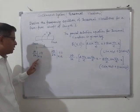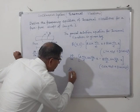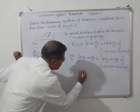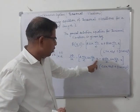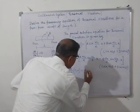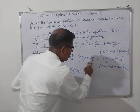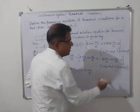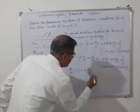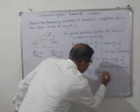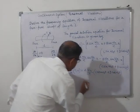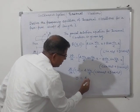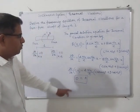Now we apply the boundary condition ∂θ/∂x = 0 at x equal to 0. Putting x = 0: cos(0) = 1, so the first term gives A·ωₙ/c, and sin(0) = 0, so the second term vanishes. This gives A·ωₙ/c · (C sin(ωₙ t) + D cos(ωₙ t)) = 0. Since the time-dependent term is not identically zero, we conclude A = 0.